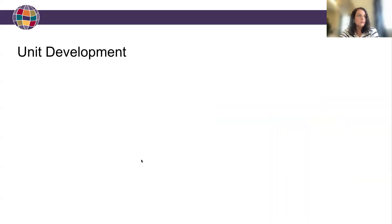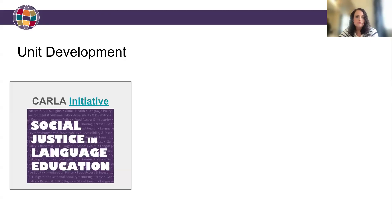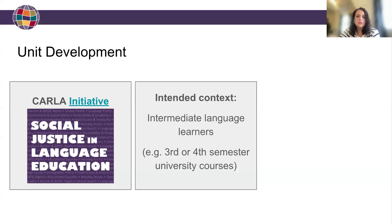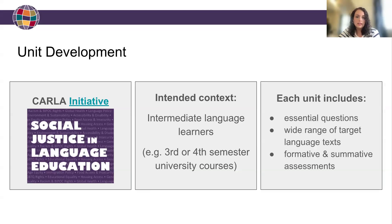These units are an outcome of CARLA's Social Justice and Language Education initiative, which seeks to improve teachers' understanding and application of critical pedagogies as they teach social justice themes. Using a multi-literacies approach, the units are designed for intermediate-level language learners, and they have been piloted in third or fourth semester language courses at the University of Minnesota. Each unit is guided by essential questions, explores a range of target language texts, and evaluates learners' progress through formative and summative assessments.